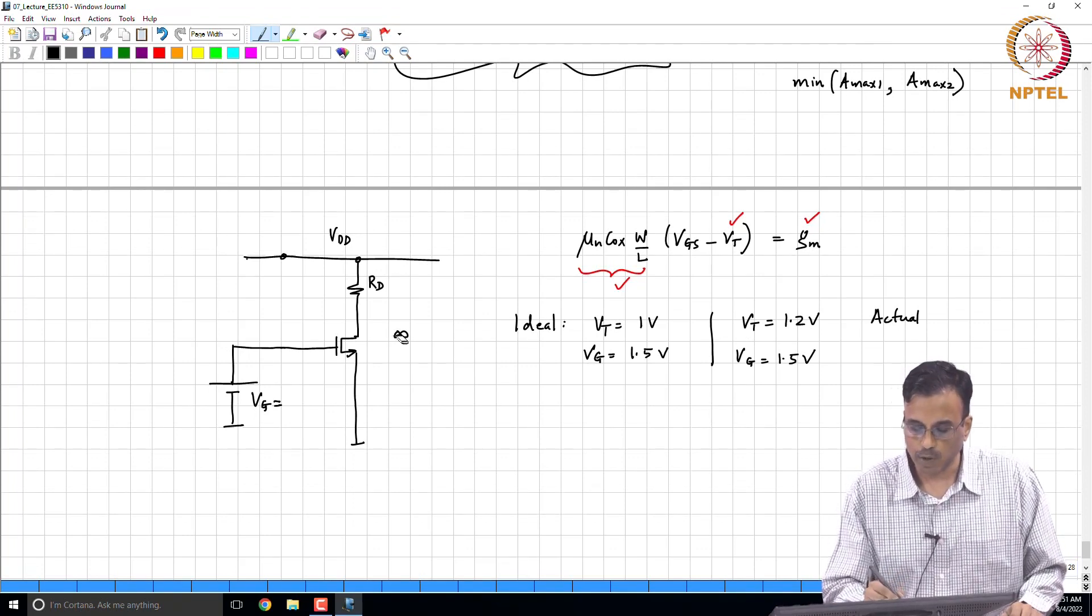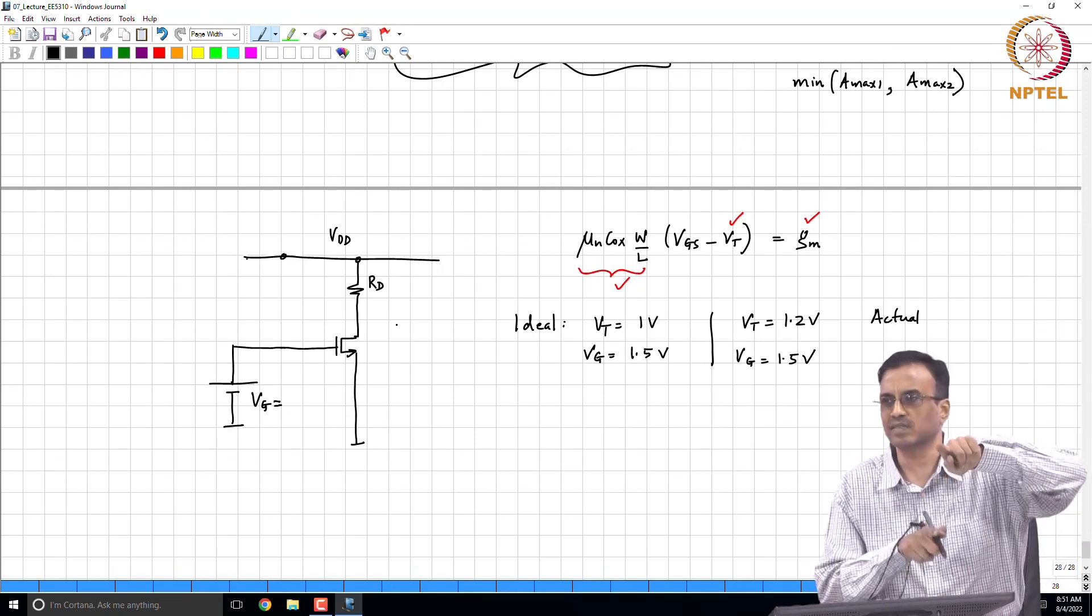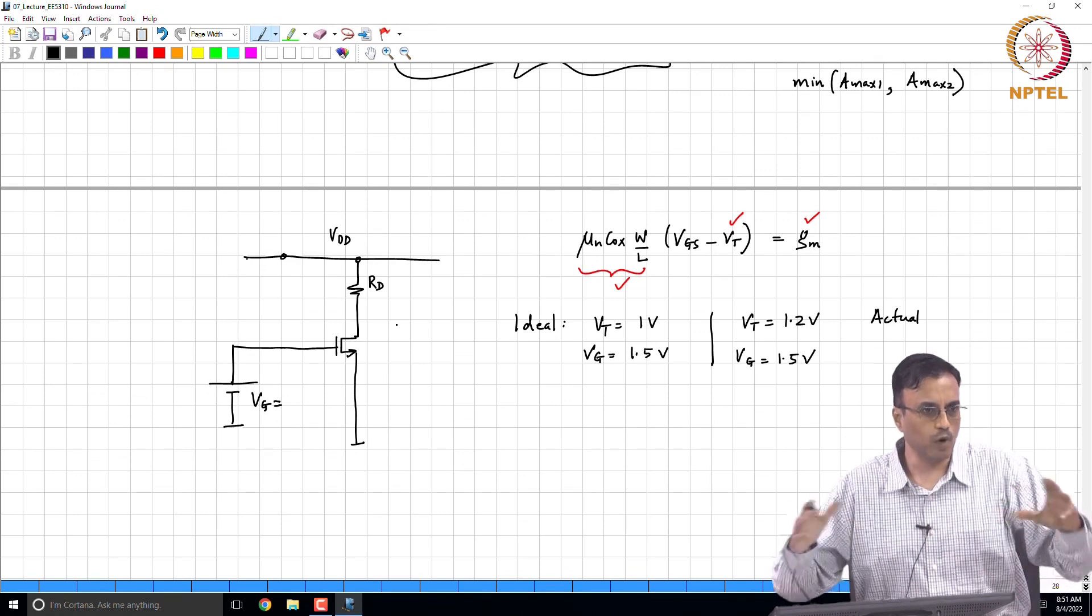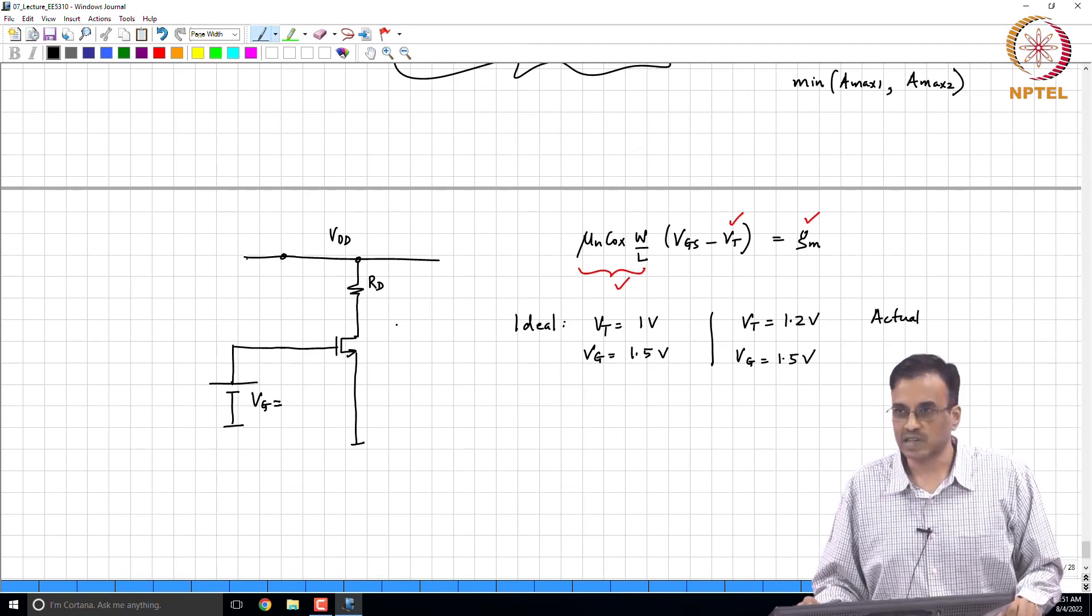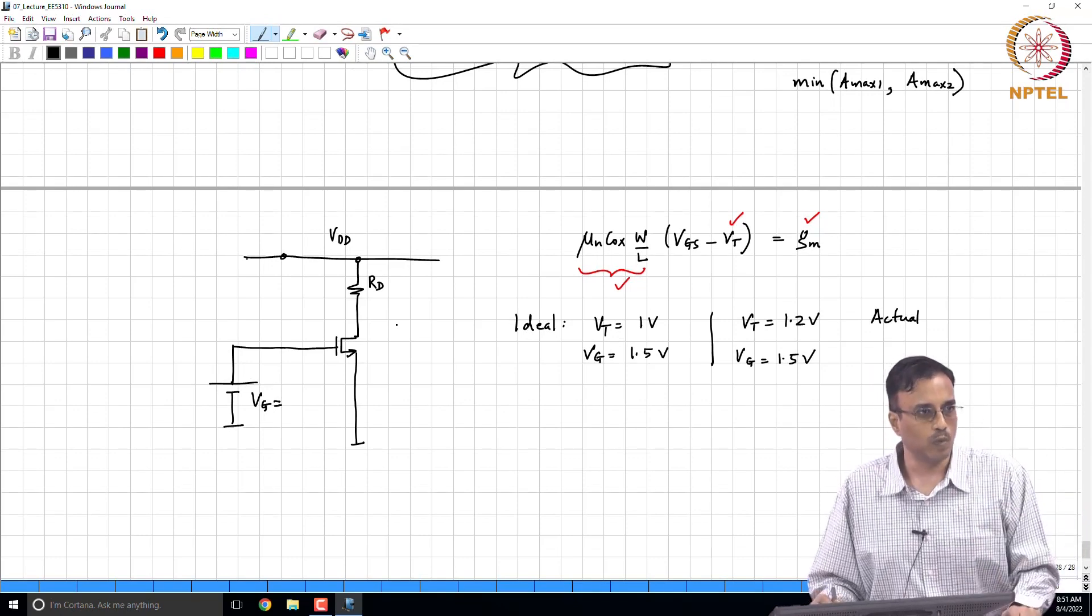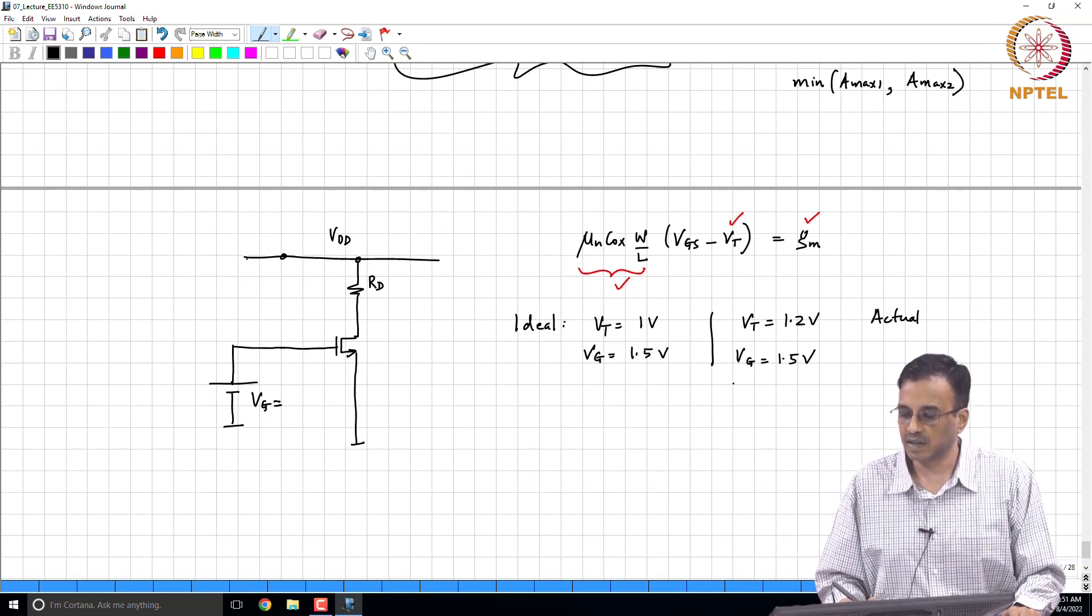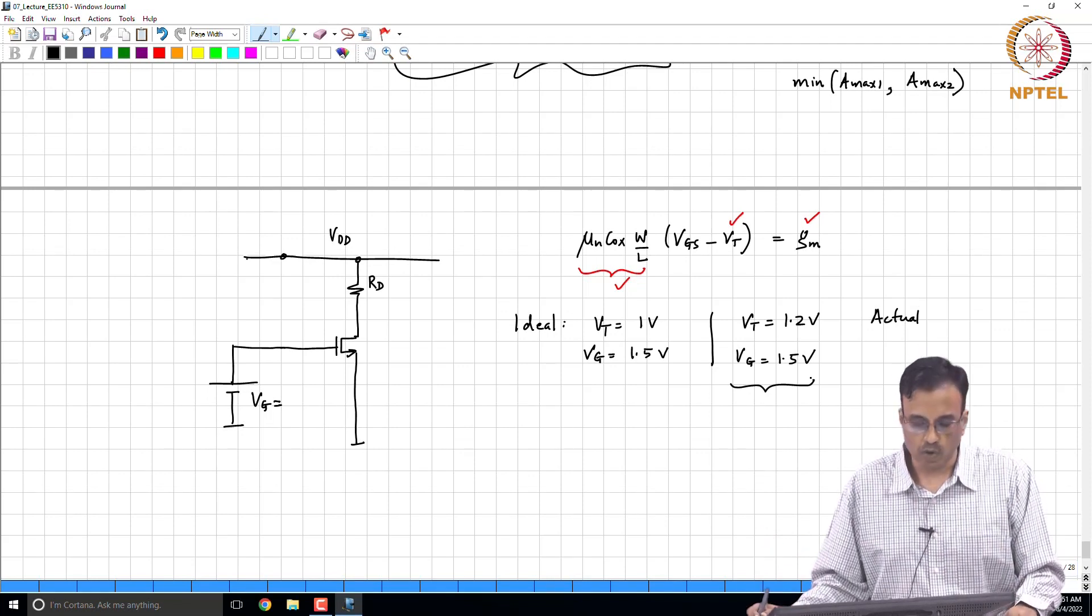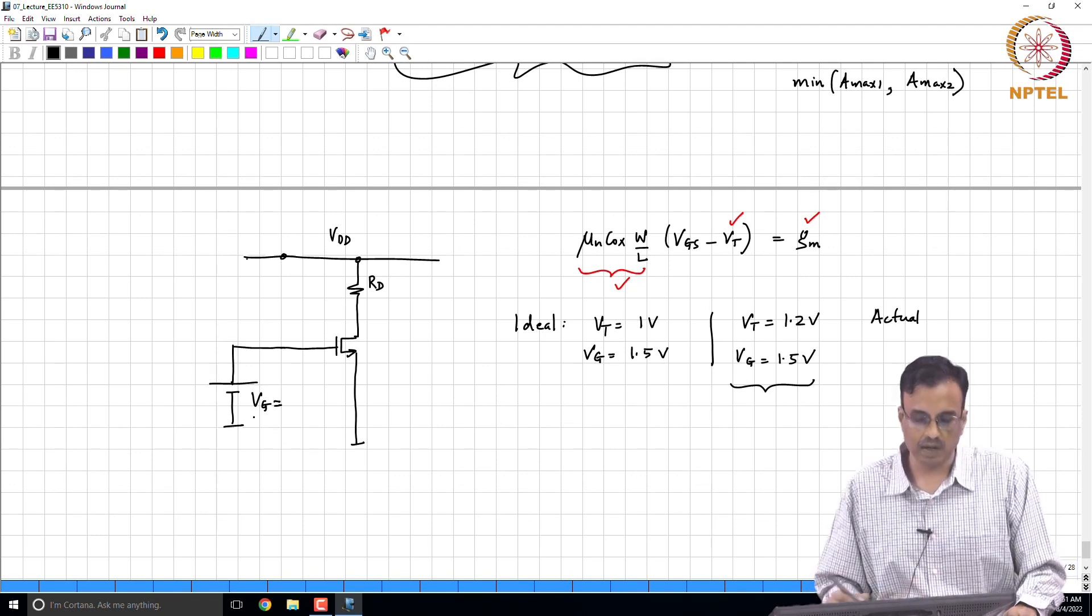If the transistor's properties have changed, the battery does not know that the threshold voltage has changed, and therefore it continues to give the same old voltage it was giving earlier. What we therefore need is, within quotes, an intelligent battery which will somehow figure out what the V_T of the transistor is and give that appropriate voltage. For example, what should have been the battery in this case? 1.7 volts. So in other words, this battery needs to be smarter than it is now.